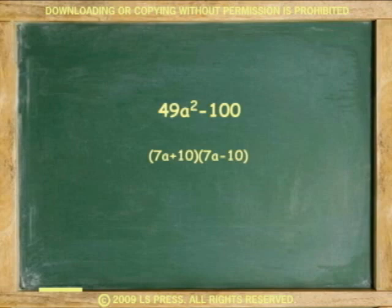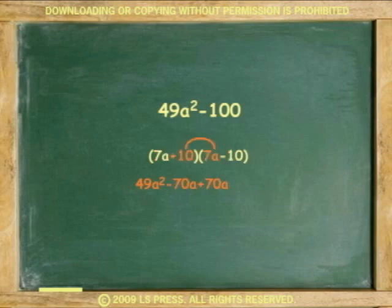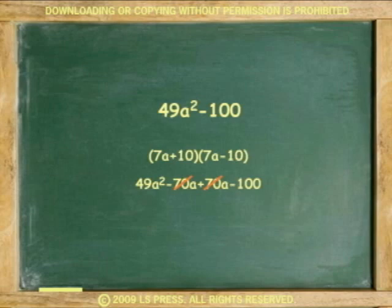Check your work by multiplying the two factored binomials — multiplication takes us back to the original binomial. Multiply 7a plus 10 times 7a minus 10. Using FOIL, 49a squared minus 70a plus 70a minus 100, we get back to the original: 49a squared minus 100.